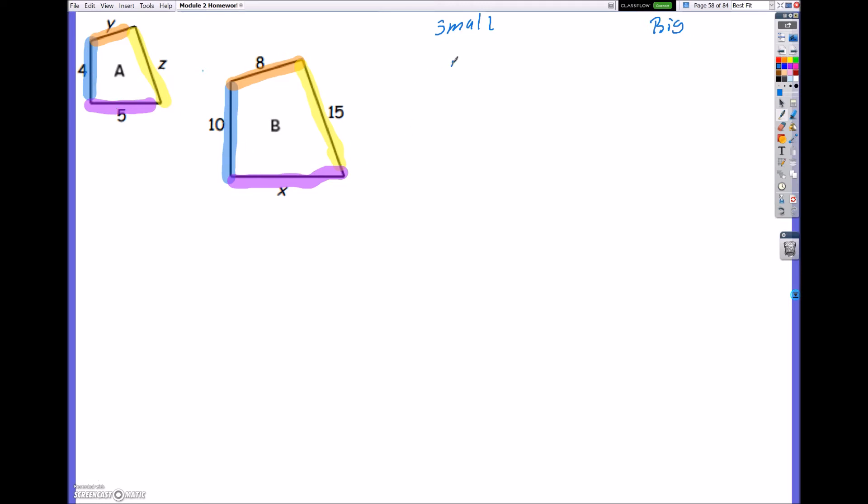So this would be in my small quadrilateral, 4 over 5. So I have 4, which is blue, my numerator. Purple, which is my denominator. So 5 is my denominator. Now I'm going to have the big blue side, which is 10, all over the big purple side, which is x.